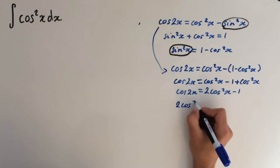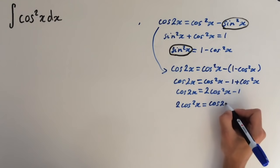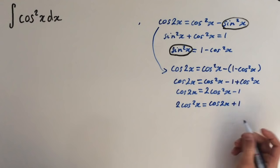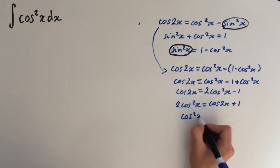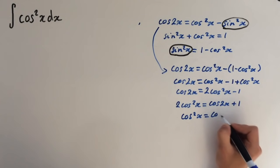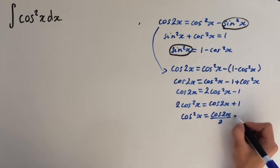2 cosine squared of x equals, if we bring the 1 onto this side, we get cosine 2x plus 1. And divide both sides by 2, we get cosine squared of x equals cosine 2x over 2 plus 1 half.